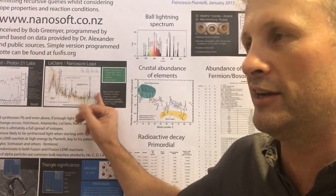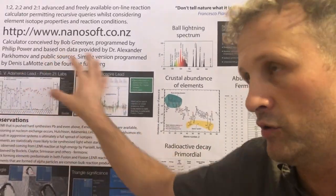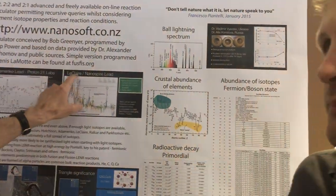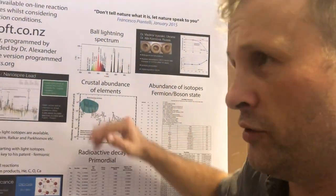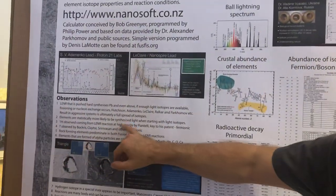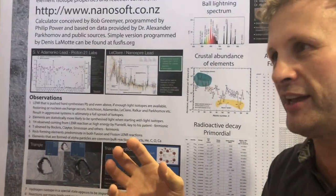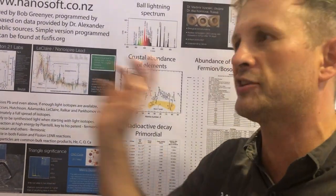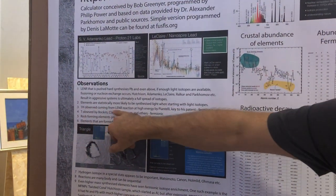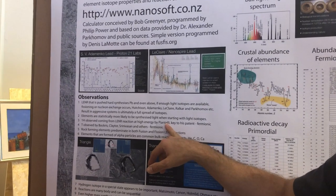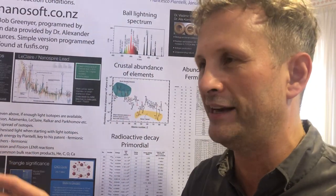It takes impurities and makes them into bioavailable atoms. It takes lighter elements like hydrogen and oxygen and makes them into bioavailable atoms. It doesn't do the nasty stuff that caused LeClair and his partner two years of radiation recovery, and has caused some deaths in this field. Using extremely simple logic based on what nature shows you from four and a half billion years of experimentation, elements are statistically more likely to be synthesized lighter when starting with life-size stuff. One hydrogen observed coming from a linear reaction at high energy by P-Intelli — 6.7 MeV — and he uses nickel as a catalyst to turn it into a particle accelerator.